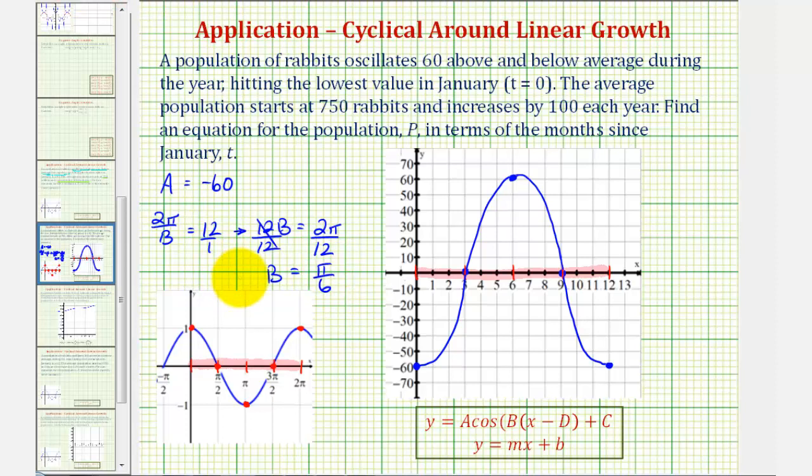Which means the trig part of our equation would be y equals negative 60 times cosine of pi divided by six times our input variable, which is t. Let's take this equation back to the first slide and add the second part of our equation, which would be the linear growth.